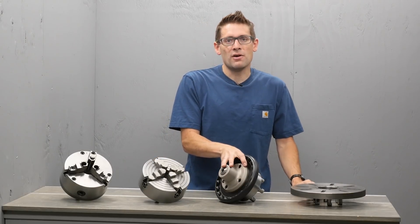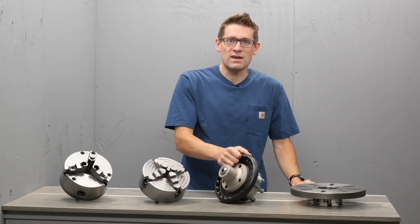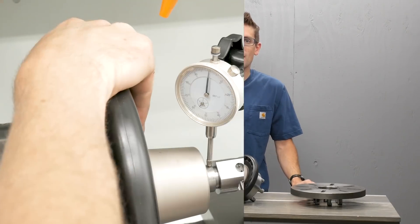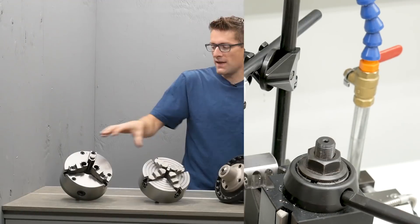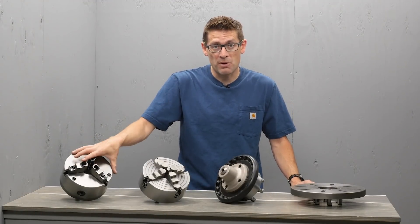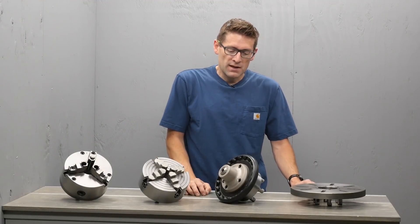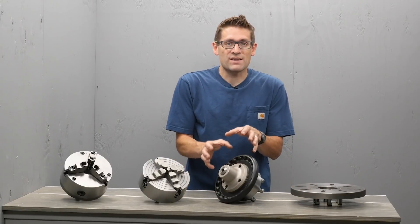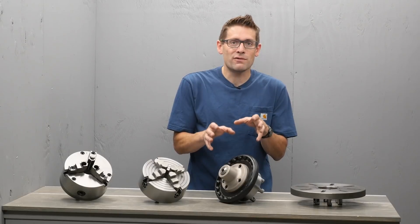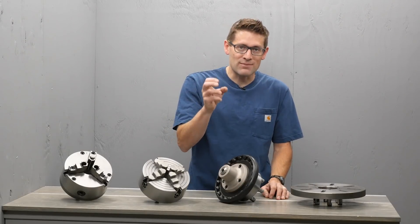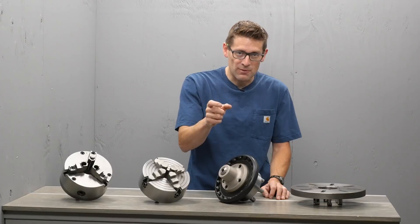These chucks also dial in your concentricity really close. You might get less than a thousandth of an inch of run out, which is several times better than the three jaw chuck that you would compare it to for quick action. The collet also has superior clamping force and is also ideally suited for clamping delicate materials, delicate items that you're machining.